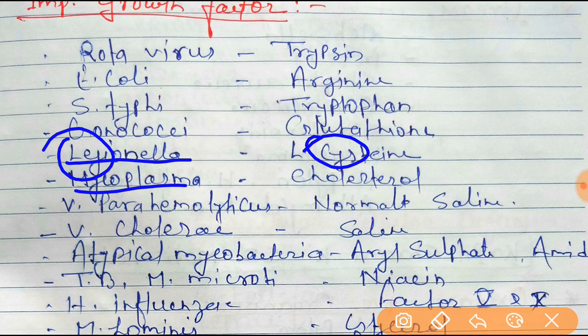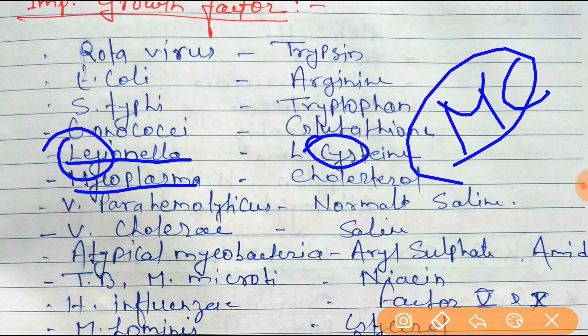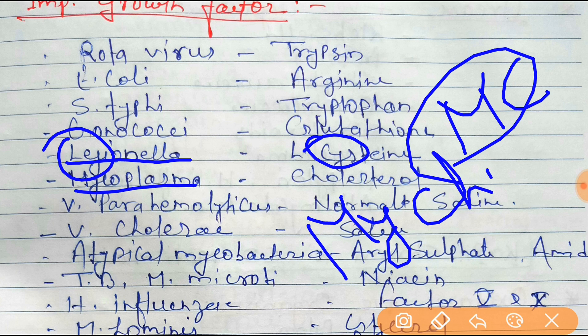Next is Mycoplasma. The growth factor for Mycoplasma is cholesterol. You can remember it by the mnemonic 'My Cholesterol' — My for Mycoplasma and cholesterol for its required growth factor.